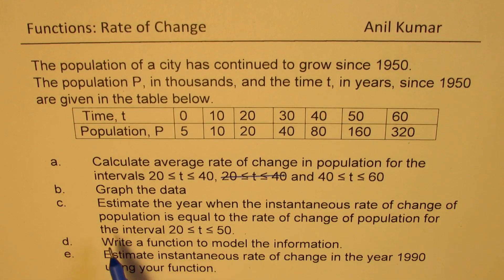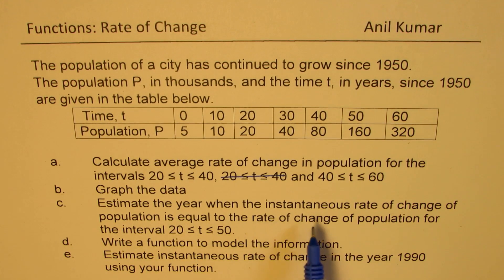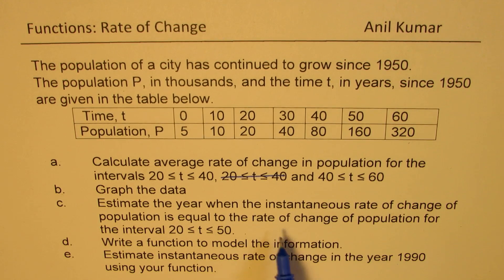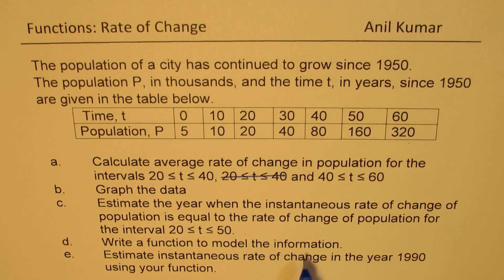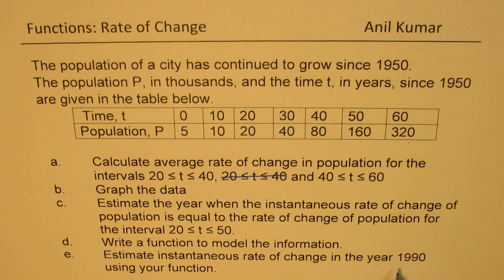Part B: graph the data. Part C: estimate the year when the instantaneous rate of change of population is equal to the rate of change of population for the interval from 20 to 50. Part D: write a function to model the information. Part E: estimate instantaneous rate of change in the year 1990 using your function.